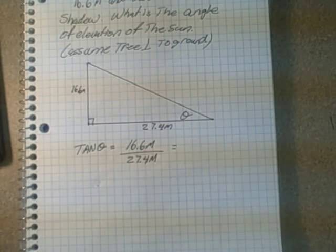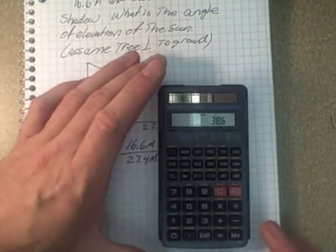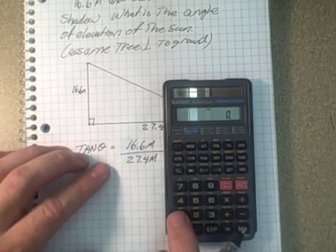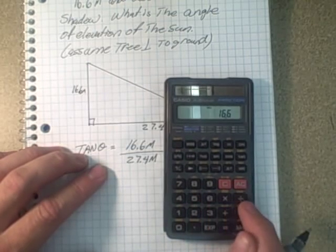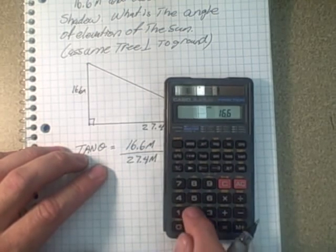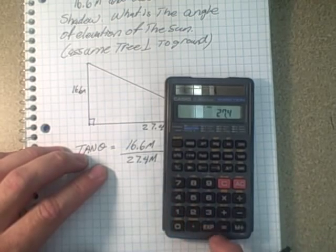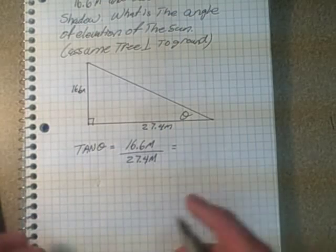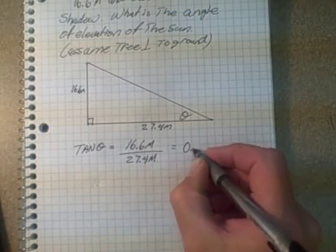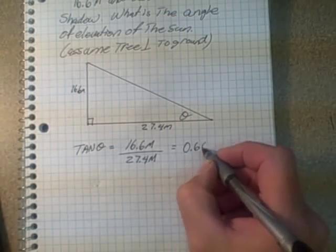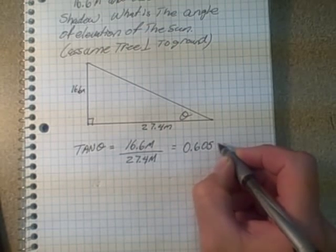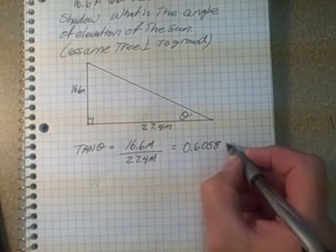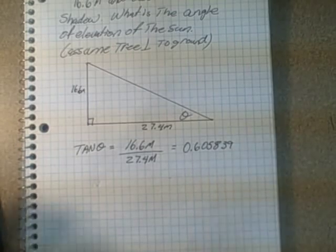So what do you get here? We take our calculator and we do our division. Clear that. So 16.6 dividing by 27.4. And we have a decimal number like that. So just for reference, that's 0.60587. I'm not deleting it off the calculator, leaving all the digits there. But I'm going to put this down just for reference.